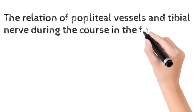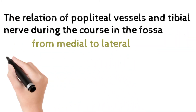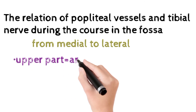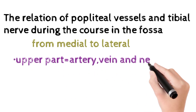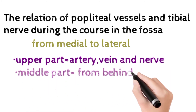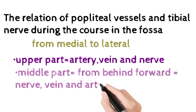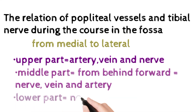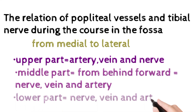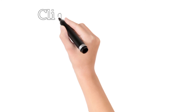The relation of the popliteal vessels and the tibial nerve during the course of the fossa: from medial to lateral in the upper part, the order is artery, vein, and nerve. In the middle part, from behind forward, it is nerve, vein, and artery. In the lower part, it is also nerve, vein, and artery.